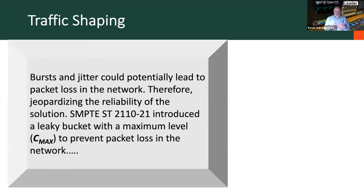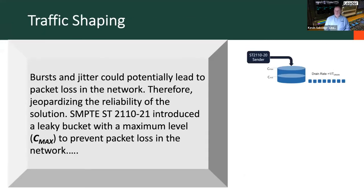We cannot afford to lose packets — it's written in law for 2110. Bursts and jitter could potentially lead to packet loss in the network, jeopardizing reliability. So 2110 has introduced a leaky bucket with a maximum C_max level to prevent loss. C_max shows the maximum size of the buffer, while C is the instantaneous value of what's in the buffer at any given time, and the buffer has a defined drain rate.